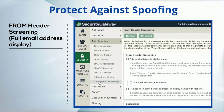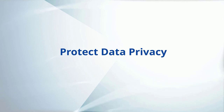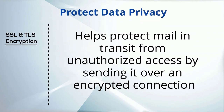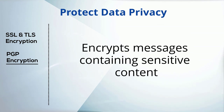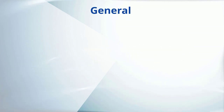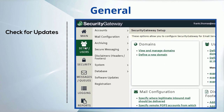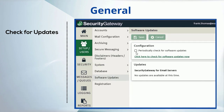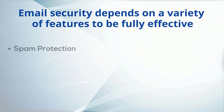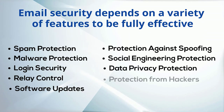Protect your data privacy using tools such as SSL and TLS for MDaemon Webmail and Remote Administration, and OpenPGP for encryption of email and email attachments. And finally, check for updates regularly to ensure that you have the latest security patches installed. Both MDaemon and Security Gateway can be configured to check for updates automatically at regular intervals. Email security depends on a variety of features to be fully effective. Following these best practices can help protect your business from email-borne threats.